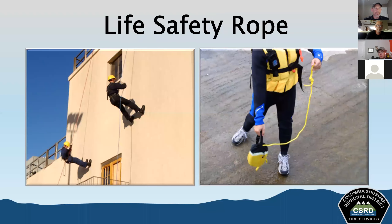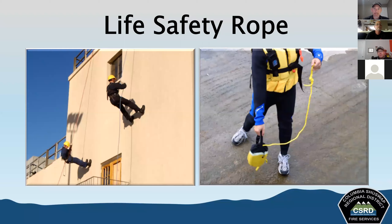Life safety rope is fully used for supporting people. Escape rope is single-use only, intended for emergency self-rescue situations. It's designed to carry the weight of only one person and must be destroyed after use. Water rescue throw lines are floating ropes used during water and ice rescues. They can be tied around the rescuer or thrown to the victim, and often have to support more than one person.